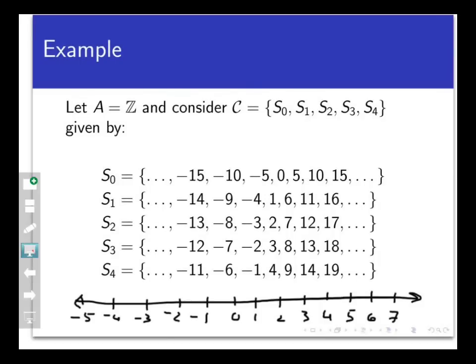Here's another very important example of a partition. Let A be the set of all integers and let script C be the collection of these five subsets of Z. This collection of subsets partitions Z because each subset in the collection is obviously not empty, because every element in the integers belongs to one of these subsets, and because if you choose any two of these subsets, they're either equal or disjoint. There is no partial overlapping of any two of these sets. It's either all or nothing.